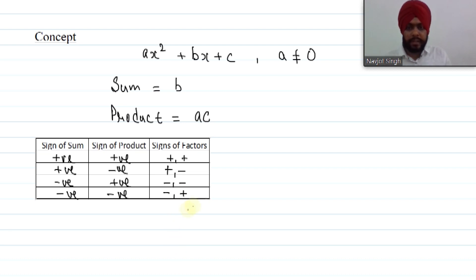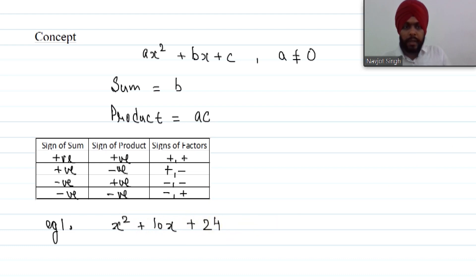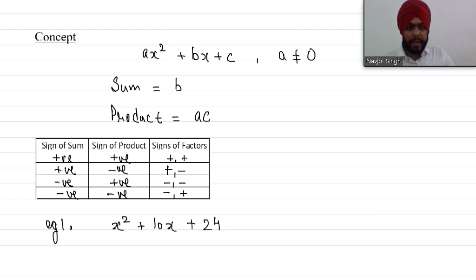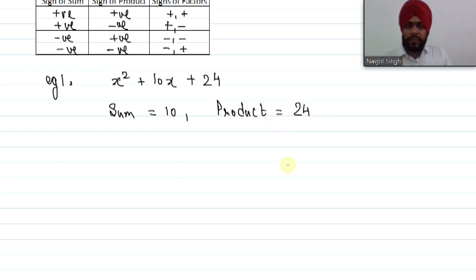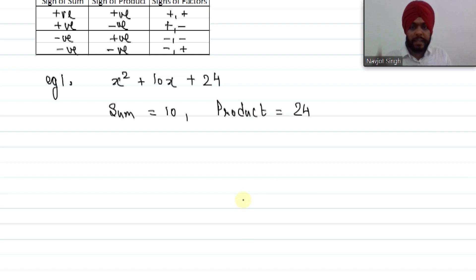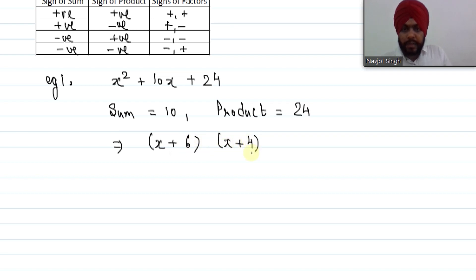Example 1 — both factors positive: x² + 10x + 24. The sum is the coefficient of x, which is 10. The product is the constant term times the leading coefficient, which is 24. We need two numbers whose sum is 10 and product is 24. That is 6 and 4. Since sum is positive and product is positive, both factors are positive. So the factors are (x + 6)(x + 4).